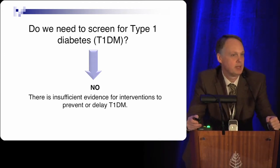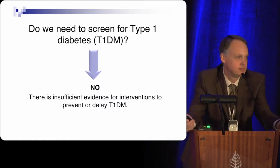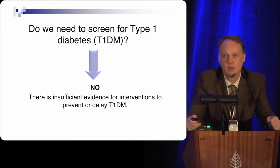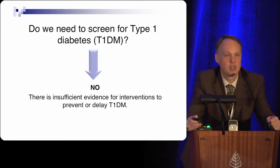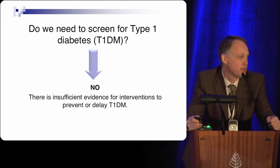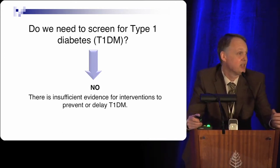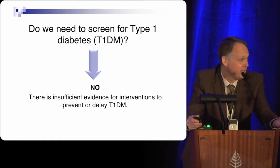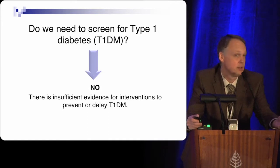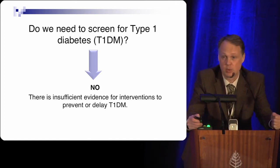Do we screen for type 1 diabetes? The answer is no. We don't have very good tests — antibody tests may predict long-term risk over 10 or 25 years, but we also don't have any realistic interventions to prevent or delay the progression of type 1 diabetes. For this reason, we do not recommend screening for type 1 diabetes.